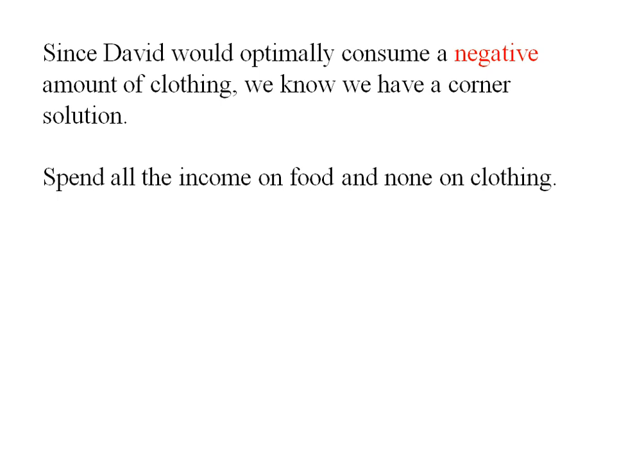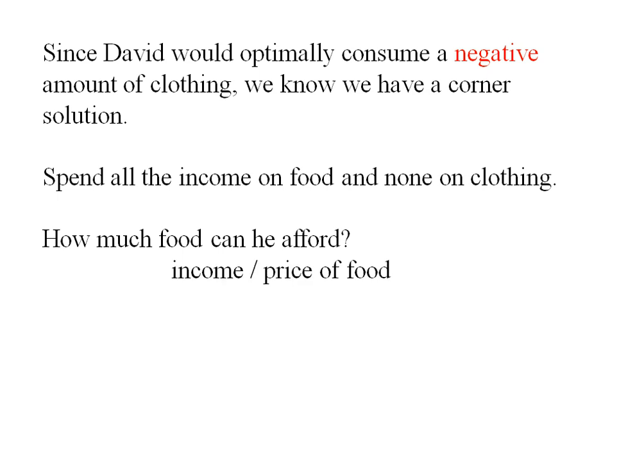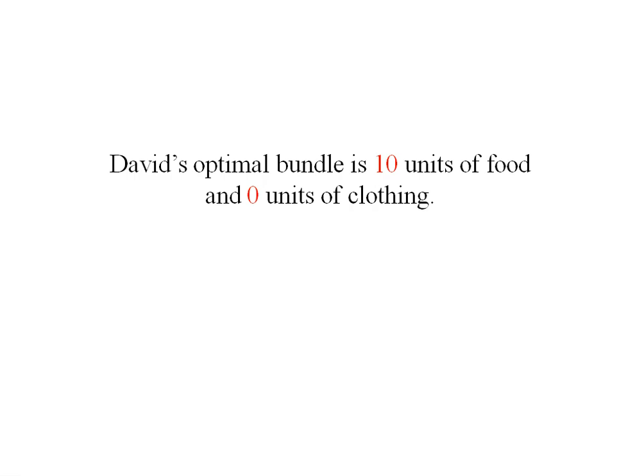Since David would optimally want a negative amount of clothing, we know we have a corner solution: he spends all of his income on food and none on clothing. If all income goes to food, the quantity of food affordable is income divided by the price of food: $10 ÷ $1 = 10 units of food. So the optimal bundle is 10 units of food and 0 units of clothing — that's what makes it a corner solution.